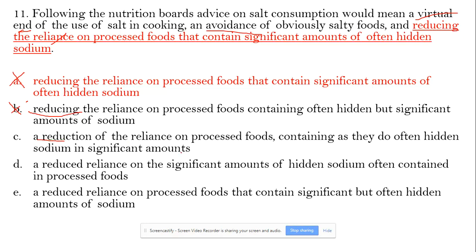However, option C says 'of the reliance on processed foods containing as they do often hidden' — here 'containing' appears to modify 'boards' rather than 'foods,' so it's an incorrect modifier. C is out.